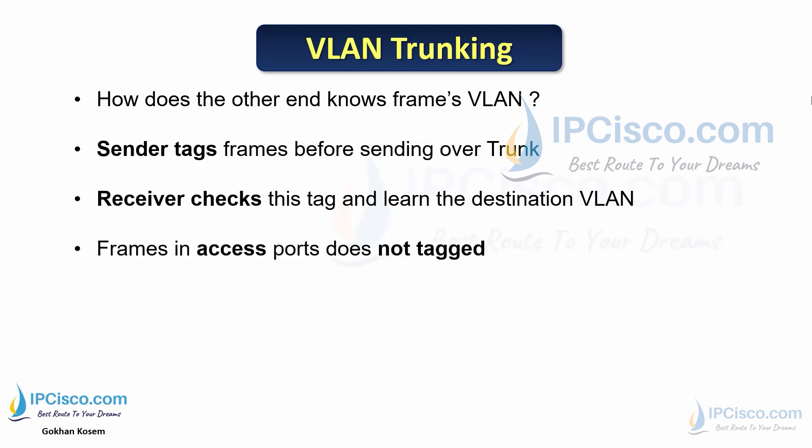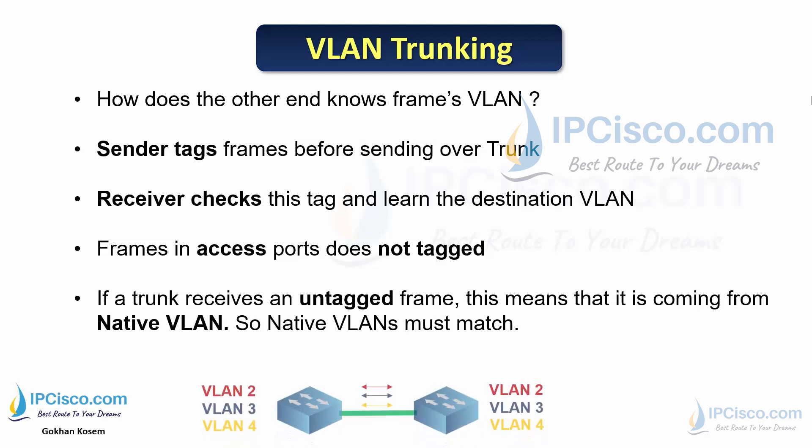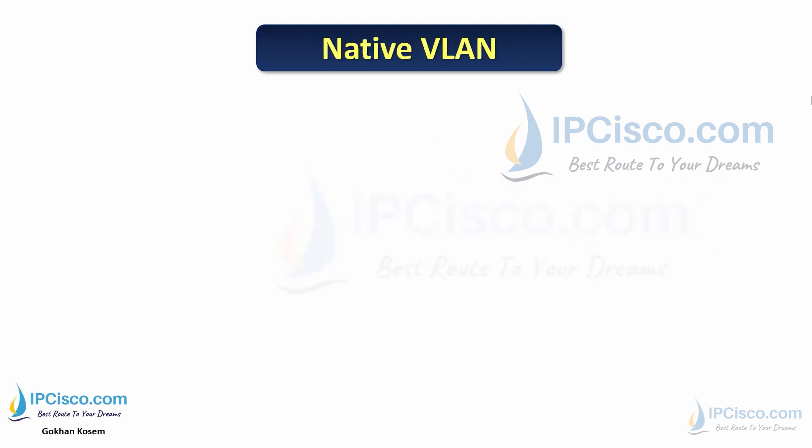Frames on access ports are not tagged. If a trunk receives an untagged frame, this means it is coming from the native VLAN. So, native VLANs must match at both ends on trunk links.